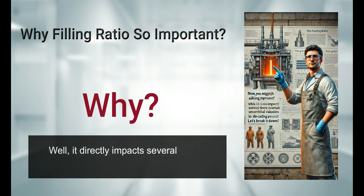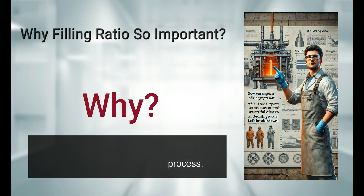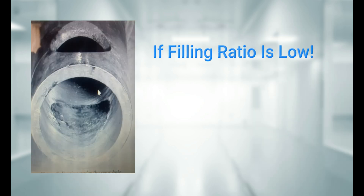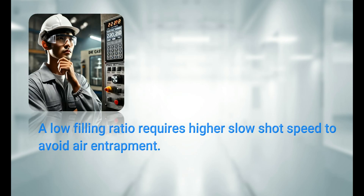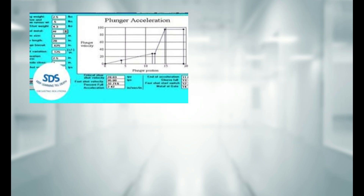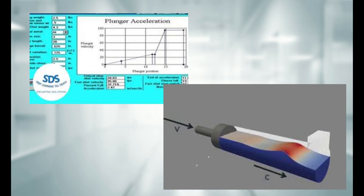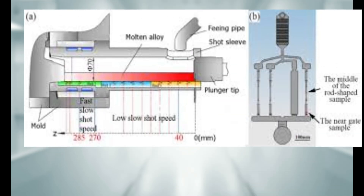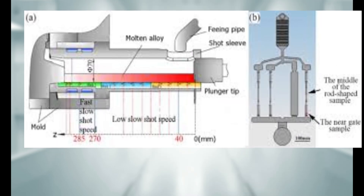Now, why is the filling ratio so important? It directly impacts several critical variables in the die casting process. First is plunger speed. If the filling ratio is low — meaning there is less molten metal in the short sleeve — you actually need a higher slow shot speed. Because less metal means more air in the short sleeve, and to avoid air entrapment we must move the plunger faster initially to push out air and ensure smooth metal flow.